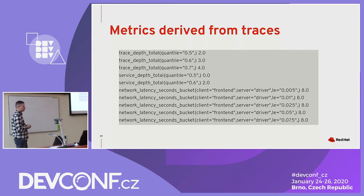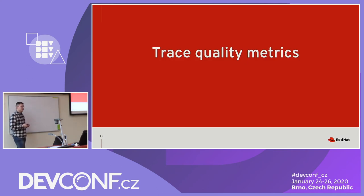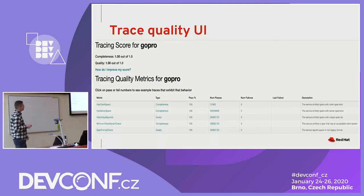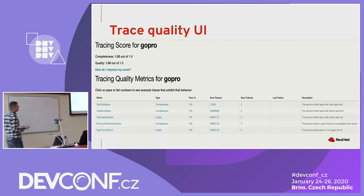Here are examples of network latency and trace depth. The other type of metrics we can derive is trace quality metrics. With tracing, the most difficult part is instrumenting your systems — deploying tracing in a new environment typically involves many problems. People can forget to instrument some APIs and you get split traces, so it makes a lot of sense to measure instrumentation quality. This is a UI from Uber, which built a custom tool to do exactly that.